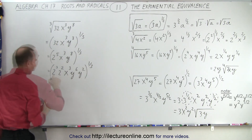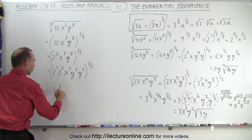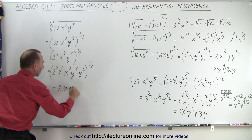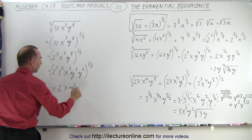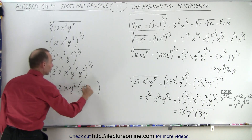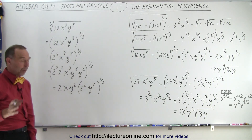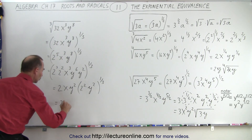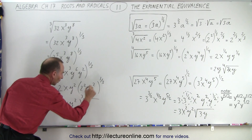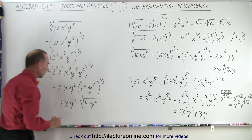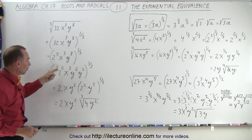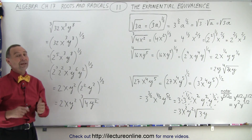Now I can apply this exponent. 2 cubed to the one-third power simply equals 2. x cubed to the one-third power equals x. y to the sixth raised to the one-third power is y squared, because 6 divided by 3 is 2. What I have left — 2 squared and y squared to the one-third power — can be put back into radical format. So this can be written as 2xy² times the cube root of 2 squared, which is 4, and y squared to the one-third power is simply the cube root of y squared. That would be the simplified form. I got to this result by first converting to the fractional exponent, multiplying exponents out, and then going back to the radical form. And that is how it's done.